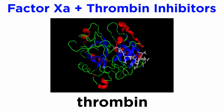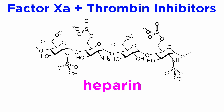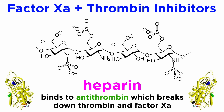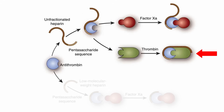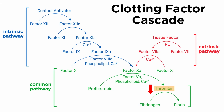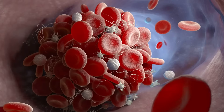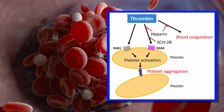Factor Xa and thrombin inhibitors target thrombin's function by reducing the generation and breakdown of thrombin. A key drug example in this class is the polysaccharide heparin. Heparin increases the breakdown of thrombin and factor Xa by increasing the activity of antithrombin. Mechanistically, heparin binds to antithrombin, inducing a conformational change that improves the rate of enzymatic breakdown of thrombin and factor Xa by antithrombin. Increased direct thrombin breakdown, as well as thrombin generation inhibition through factor Xa breakdown, reduces the ability of thrombin to convert fibrinogen to fibrin and reduces platelet aggregation through reduced activation of protease-activated receptors on platelets. Reduced fibrin generation and reduced protease-activated receptor activation both lead to anticoagulation.